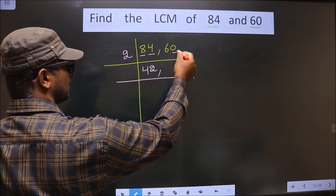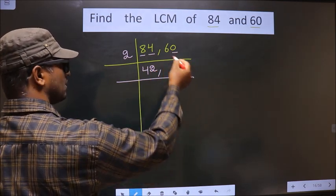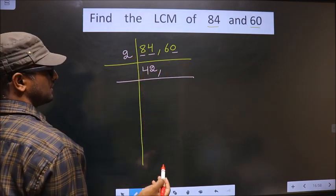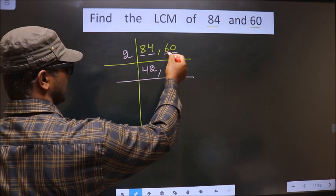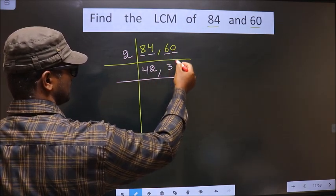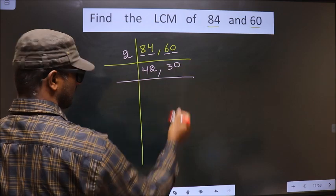Now, here the last digit is 0, so even this number is also divisible by 2. So, first number is 6. When do we get 6 in the 2 table? 2 threes are 6. This 0 as it is carried down.